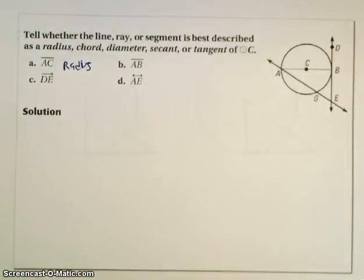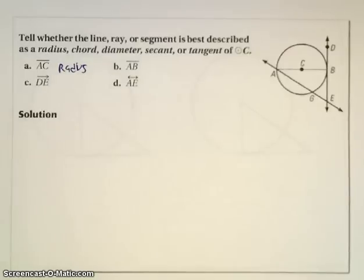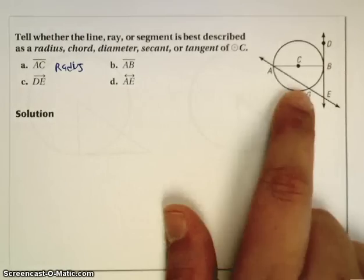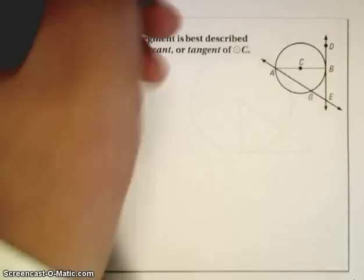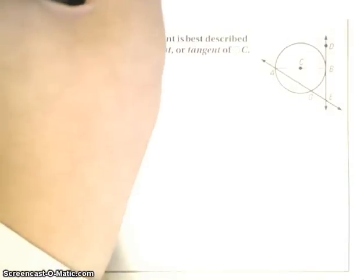AB, on the other hand, is also a segment, however, its endpoints are both on the circle, which means I would say it's a chord. However, since it goes through the center of the circle C, we're actually going to call this a diameter.